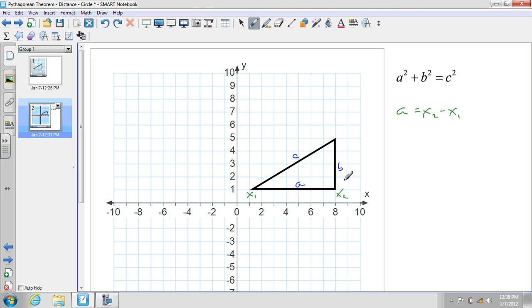x sub 2 is 8 and x1 is 1, and I'm looking at the points there on the x axis here. And the distance a is equal to 7.